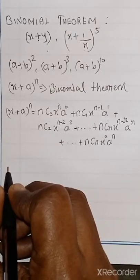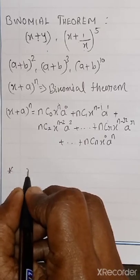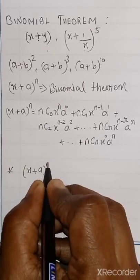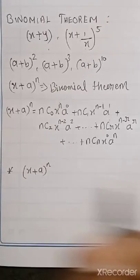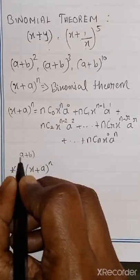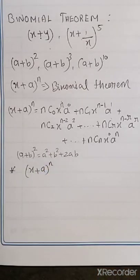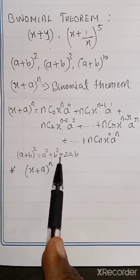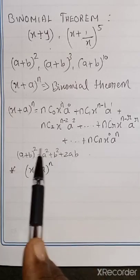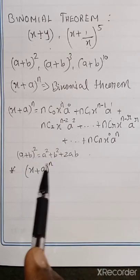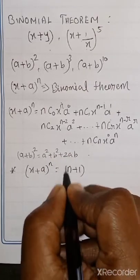Here is a note you have to know. If X plus A power N is given, how many terms will there be? For example, A plus B whole square gives A squared plus B squared plus 2AB — that is 3 terms, and the power is 2. Power 3 gives 4 terms, power 5 gives 6 terms. So the general formula: if we have X plus A power N, then we will get N plus 1 terms.